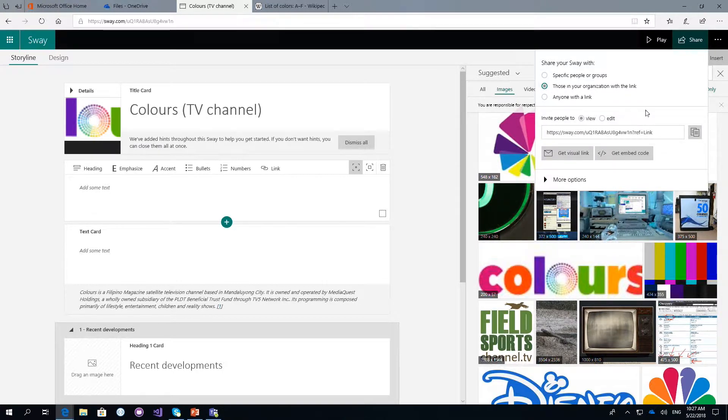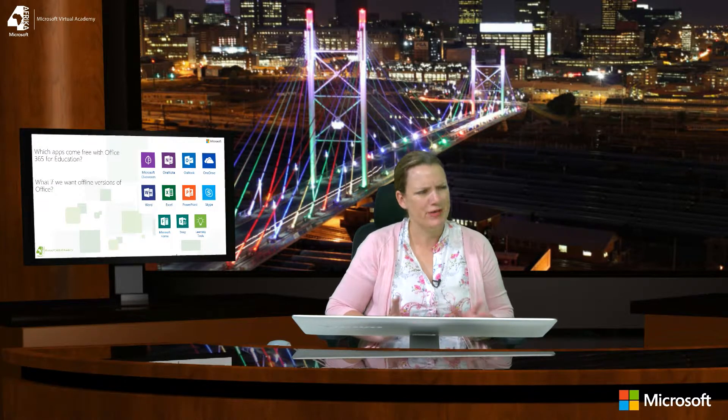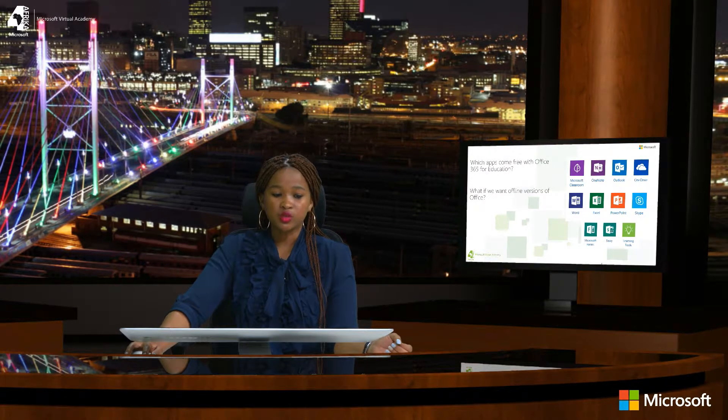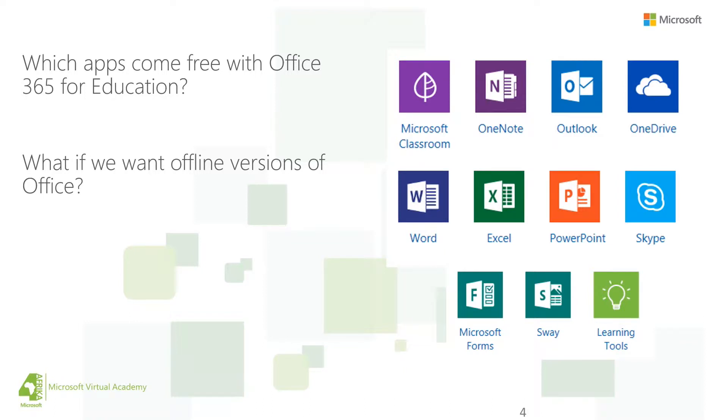Sway is just one of the many tools available through Office 365. We've talked about Word, PowerPoint, Excel, and now Sway. Sway is only available online, but other tools like Word, PowerPoint, and Excel — what happens if a teacher wants to use those apps at home where they maybe don't have internet access? With your Office 365 account, you actually have access to install your applications on 15 devices: five would be tablets, five desktops, and five mobile devices like your cell phone. On your landing page there's a tab that says 'Install Office Applications.'